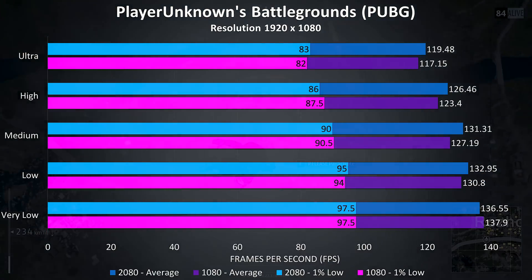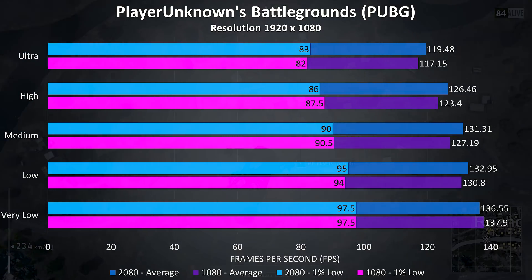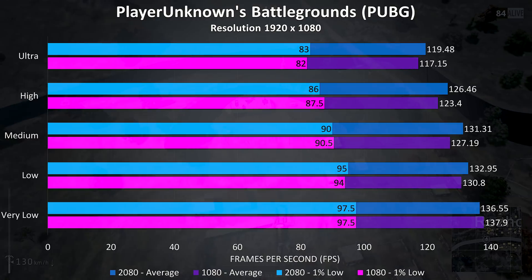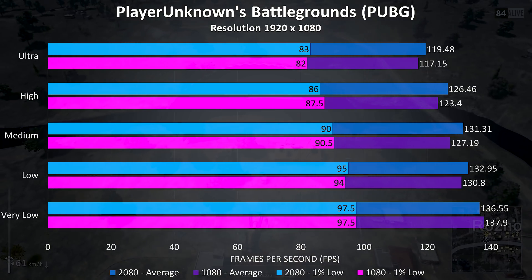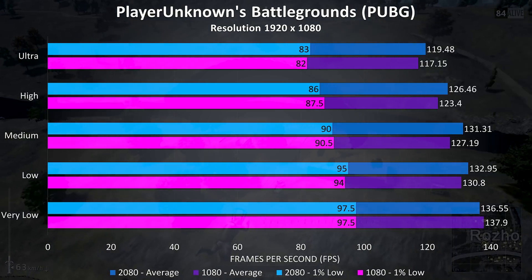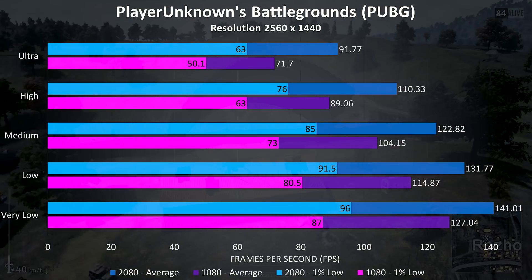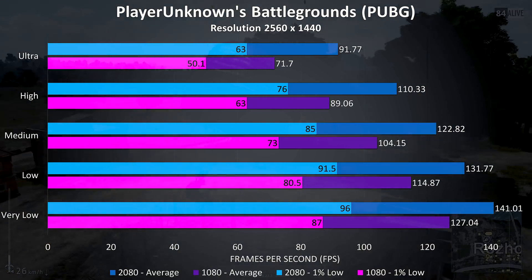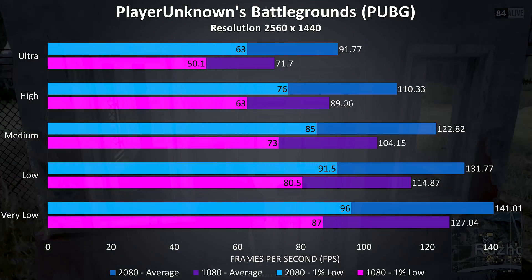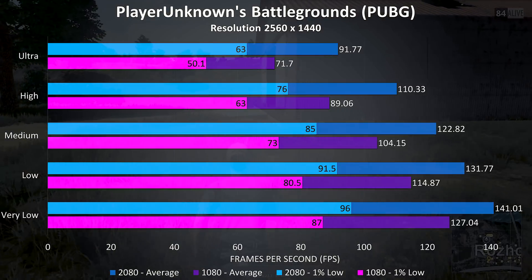PUBG was tested with the replay feature, and unlike Fortnite I was able to use the same replay here as they generally last longer. At 1080p and ultra settings I had the lowest improvement with the 2080 out of all games tested at this resolution, with just a 2% boost to average FPS. At 1440p the difference between the graphics starts to have more effect, with a much larger 28% improvement to performance at ultra settings, now making it the second best game out of all 10 tested at 1440p, and with a 25% improvement to the 1% low as well.